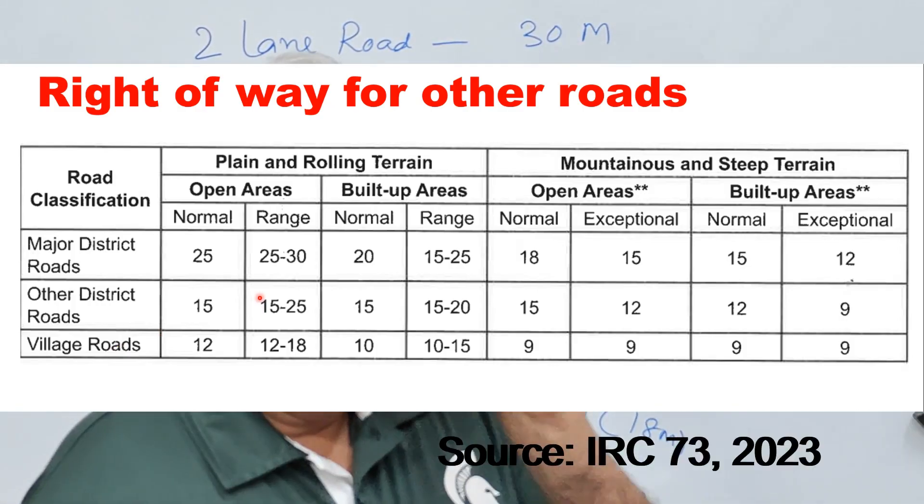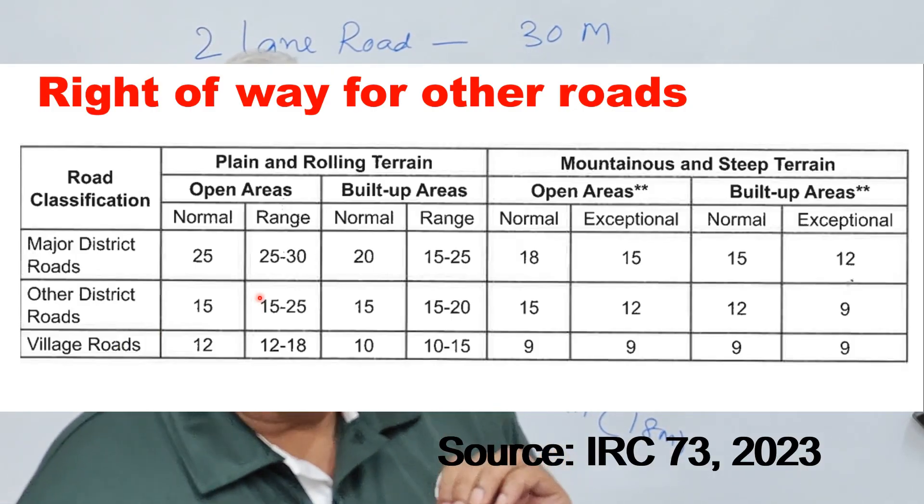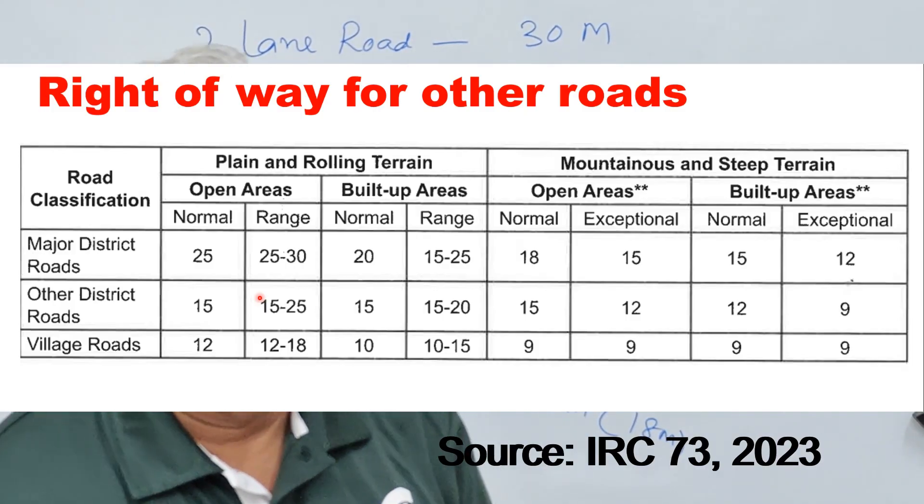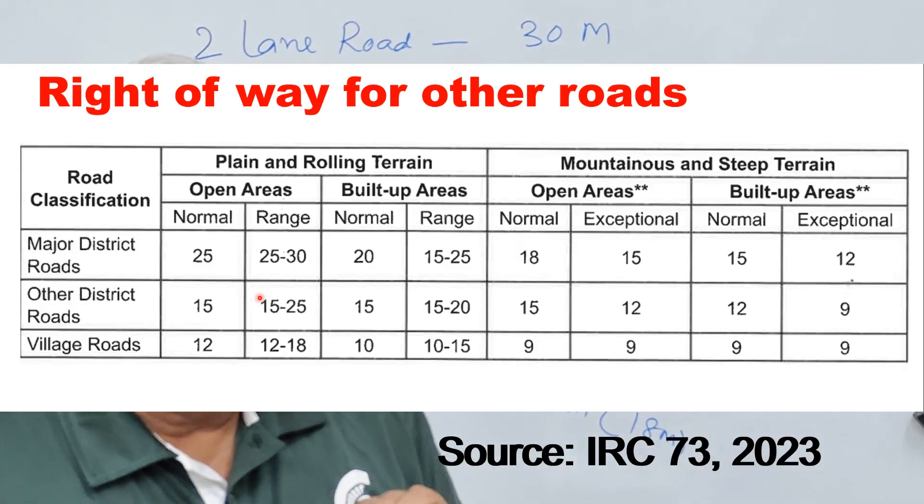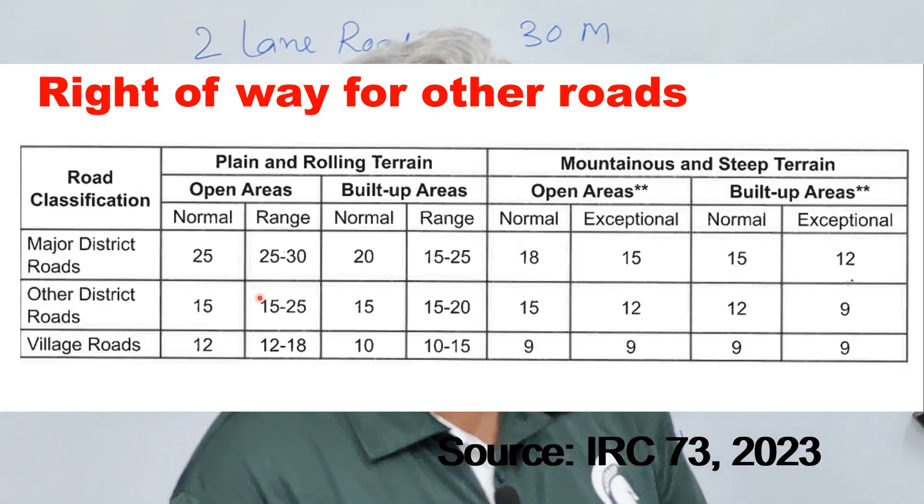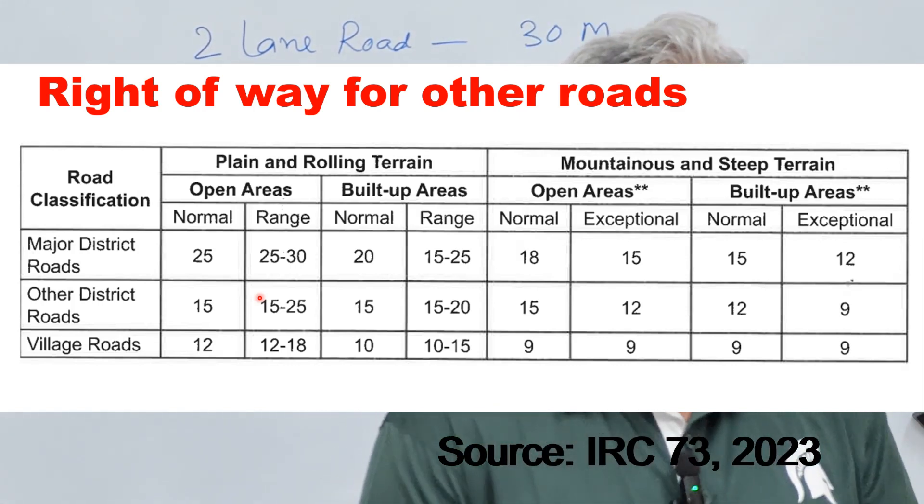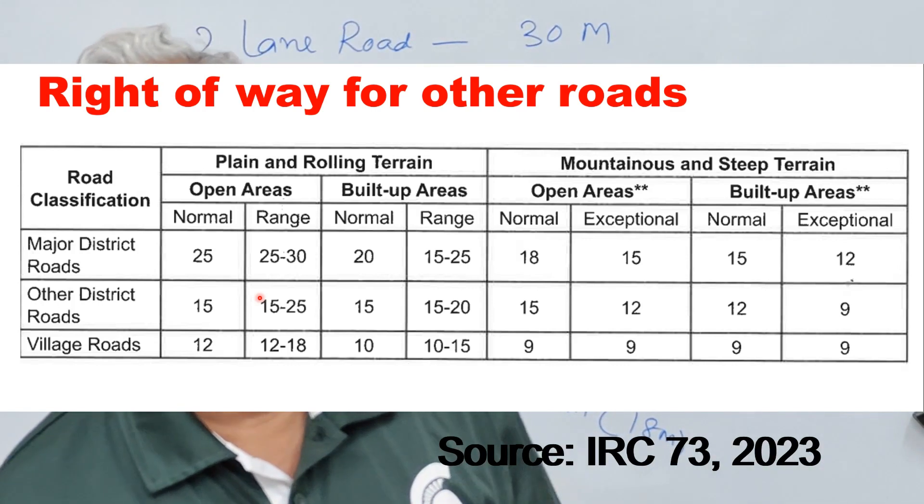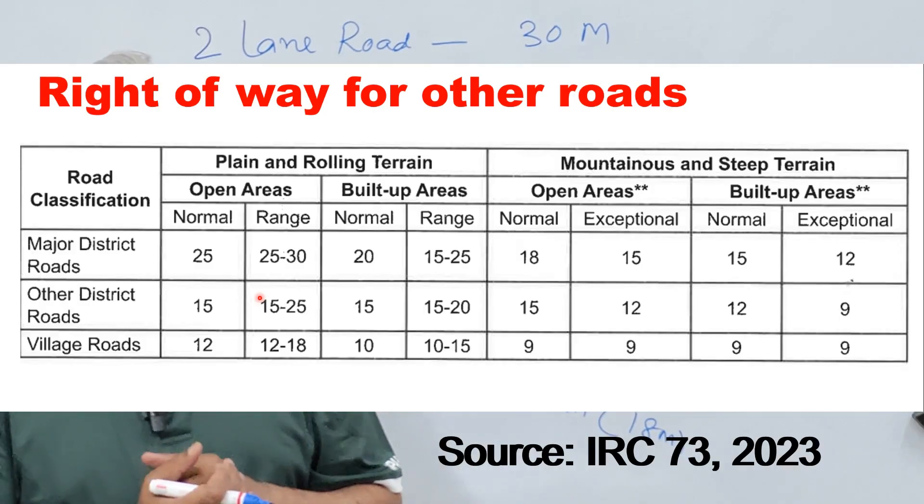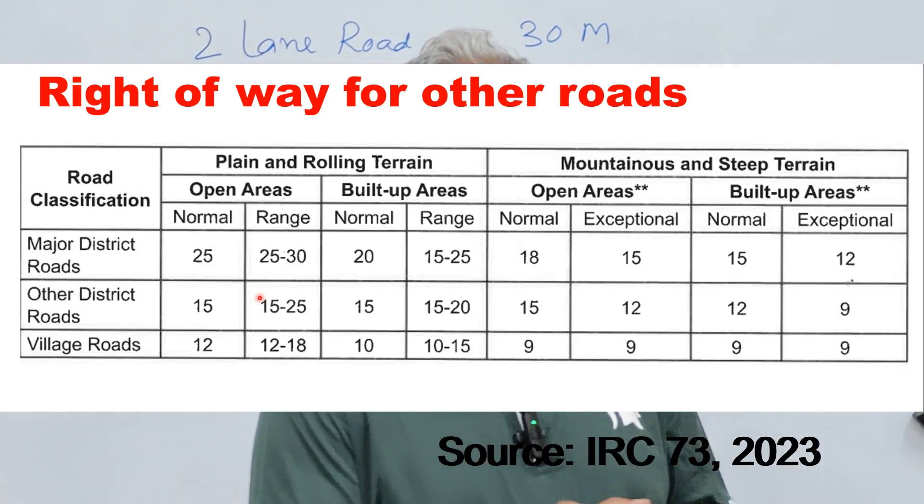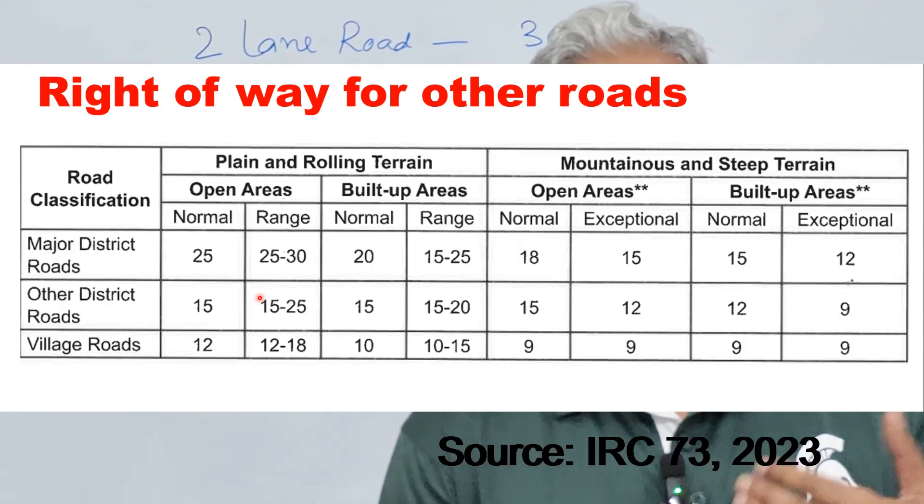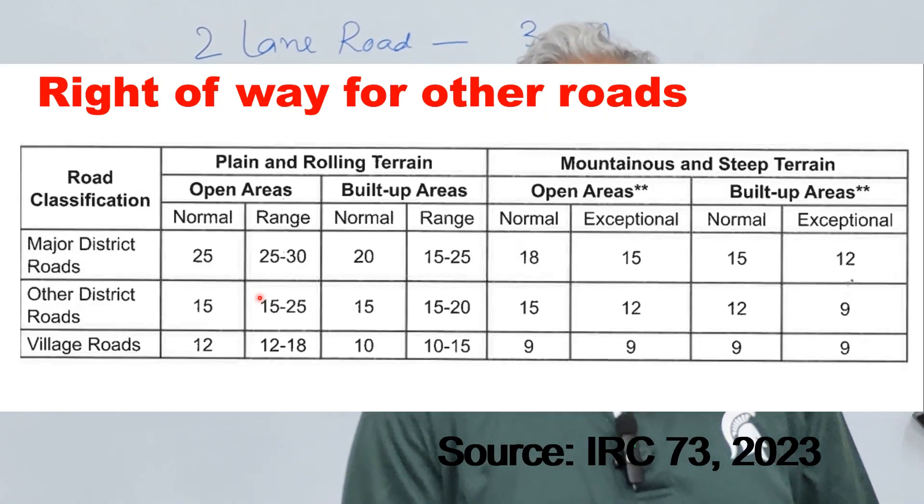Now few important points. Number one the right of way shall be enough to ensure a setback distance of at least 5 meter. Number two additional land is required at locations involving deep cut to maintain stability of slopes, high fills and unstable or landslide areas. Number three if the road is planned to be upgraded in the future then land with corresponding to the high class of road should be acquired in the beginning itself. Because later on it becomes very difficult to acquire additional land.